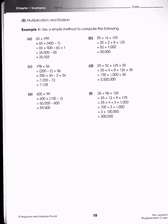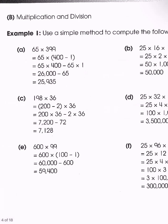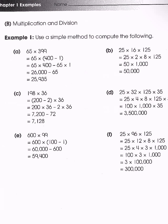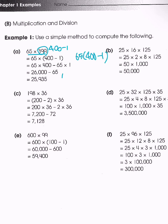Now we're going to look at some problems for multiplication and division. We have 65 times 399. We can do that vertically, but another way is to think of 399 as 400 minus 1. So that is basically 65 times 400 minus 65, which is much easier to compute.